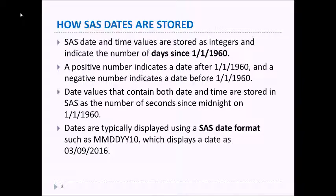Dates are stored in SAS as an integer beginning with the date January 1, 1960. A positive number indicates a day after 1/1/1960, and a negative number indicates a date before that. Date values that contain both date and time are stored as the number of seconds since midnight on 1/1/1960. Dates are typically displayed in SAS using a format such as MMDDYY10. which displays the date as shown here.